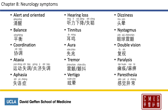Tinnitus is 耳鸣. Aura is 前兆 or 先兆. Tremor is 震颤 or 颤抖. Vertigo is 眩晕. Dizziness is 头晕. Nystagmus is 眼球震颤. Double vision is 复视, 复 meaning again or double. Paralysis is 瘫痪 or 麻痹.